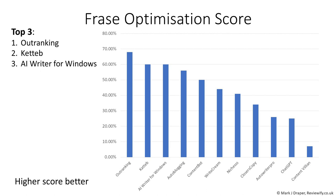I wasn't surprised to find Outranking did very well, as Outranking is very similar to Phrase in that it searches the internet before it writes the article. I was pleased to see Kateb doing very well too — that's a new tool I haven't really explored that much. AI Writer for Windows also did well, considering I just used the one-click blog post rather than the SEO optimized option. I have tried the SEO optimized version and that can get it much closer to 100%.